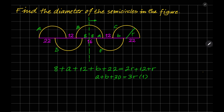Let me change the color and concentrate on semicircle E. Then a plus 12 plus b is equal to 2 times the radius of semicircle E. So a plus b is equal to 2r minus 12. This is equation 2.